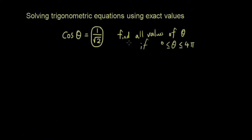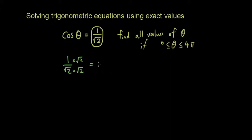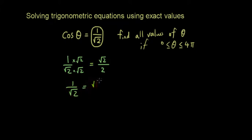The first thing we want to do is show that 1 over √2, if we rationalize the denominator, does not change its value. The bottom becomes √2 times √2, which is 2, and the top becomes √2. So 1 over √2 is exactly the same as √2 over 2.